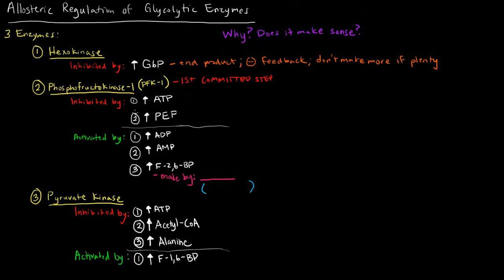The first allosteric effectors we'll talk about are the ones that inhibit phosphofructokinase. High levels of ATP inhibit phosphofructokinase. Why would that happen? High levels of ATP indicate a high energy state. Phosphofructokinase commits to glycolysis, and one of the products of glycolysis is ATP. So we want to commit to glycolysis when we want to create energy — if there's already plenty of energy around, don't make more.